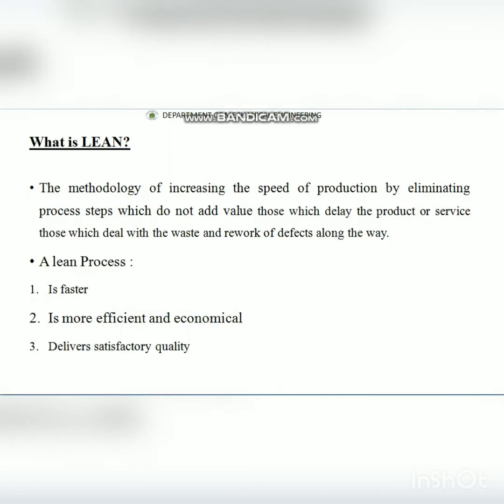The Six Sigma level is also known as the Lean Manufacturing technique — the Lean Six Sigma concept. Lean Six Sigma is a process that deals with products or services to reduce waste and defects in a faster, economical, and efficient method, while also delivering a satisfactory quality level that meets customer satisfaction.